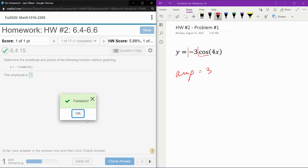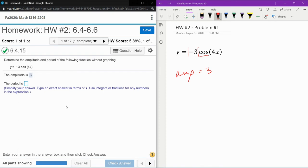And to find the period now, for a sinusoidal function, for sine or cosine, the period formula is 2π over b.